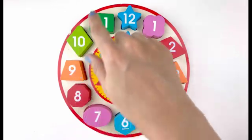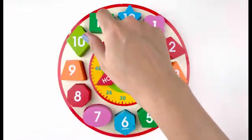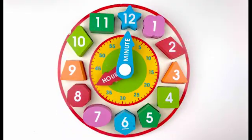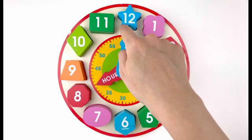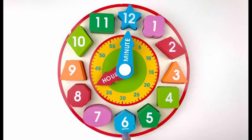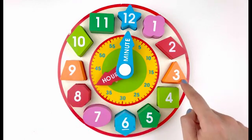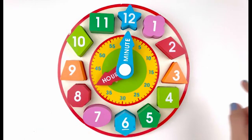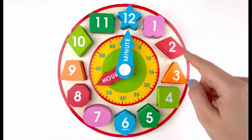The face of the clock is where the numbers stay in their special places every second of the day. Number twelve is at the top and the six is at the bottom. Number nine is on the left and number three is on the right. The other numbers are in between in a circle.